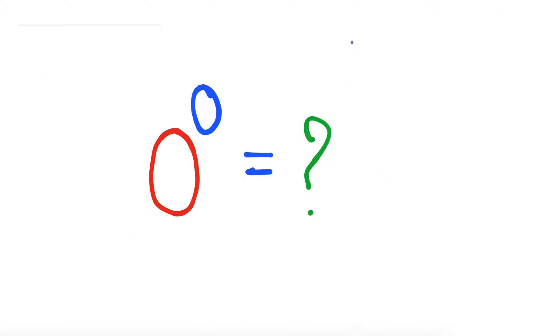We have been studying that any number raised to the power 0 is equal to 1. So by that logic, if k is 0, is 0 raised to the power 0 equal to 1? And then we have another theory that 0 raised to the power k is 0, because we are multiplying 0 k times. So by this logic, 0 raised to the power 0 should be 0. So which of these is true or none of these is true?